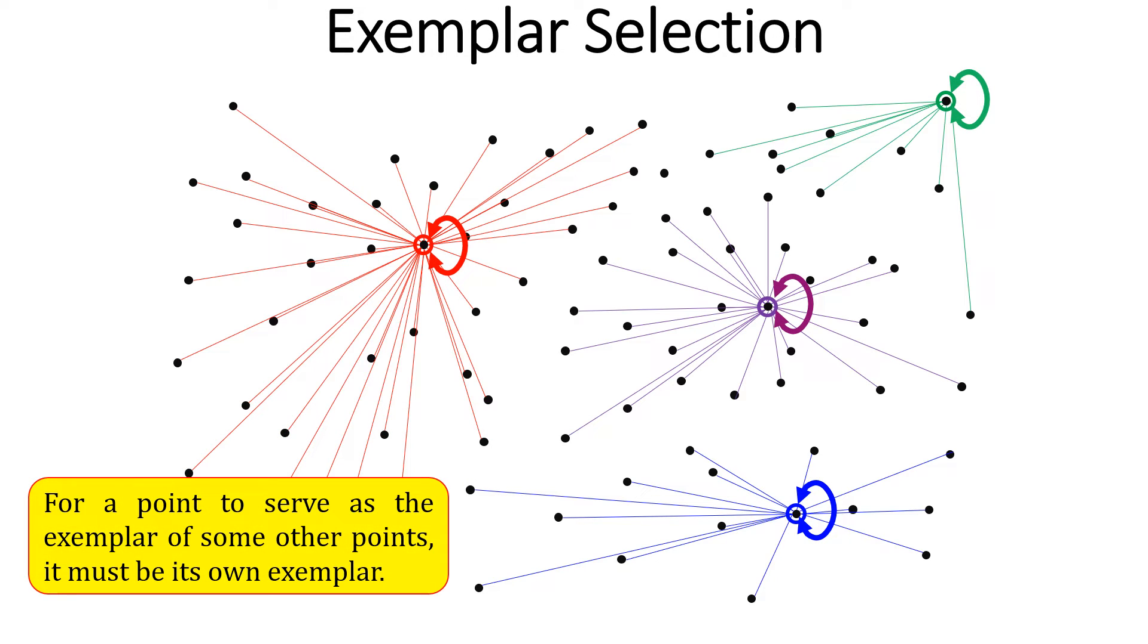For a point to serve as the exemplar of some other points, it must be its own exemplar. Next, let us look at how message passing takes place in affinity propagation clustering.